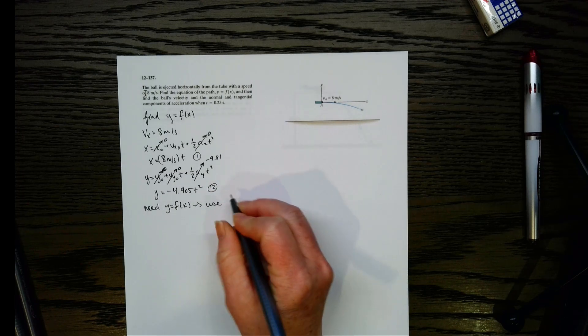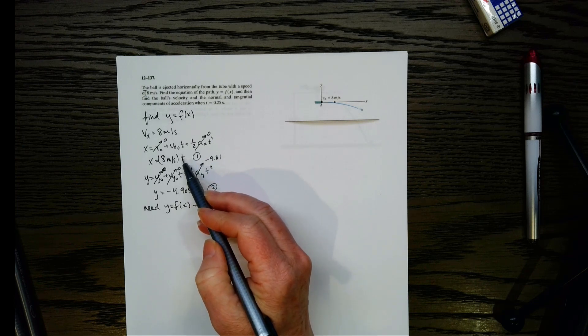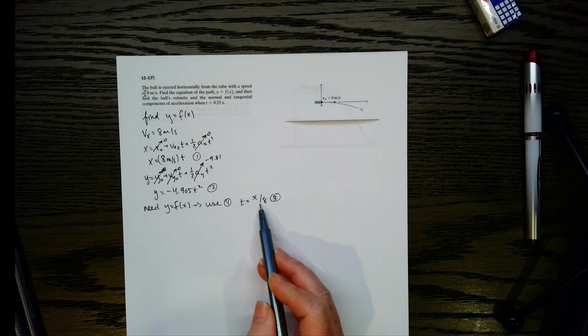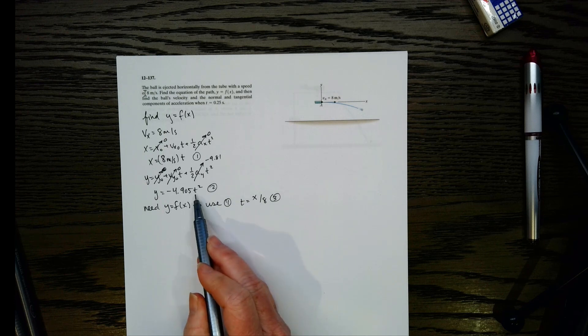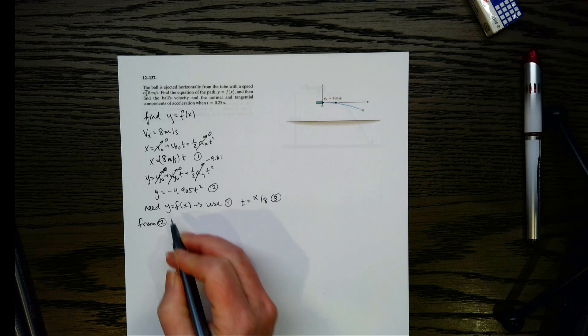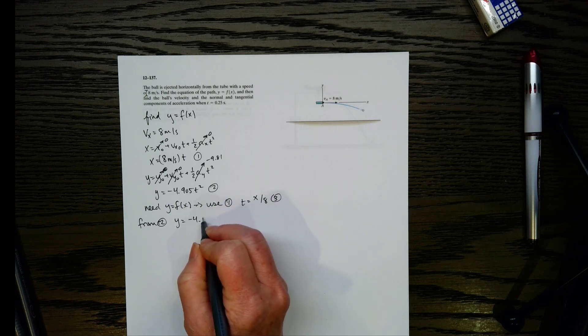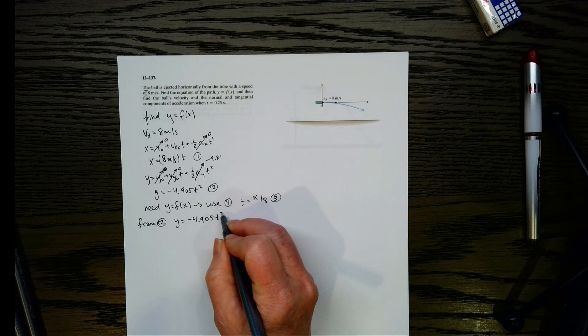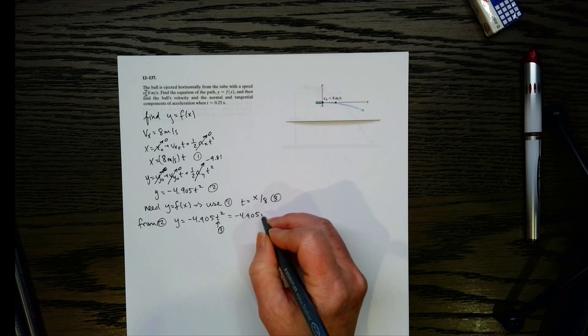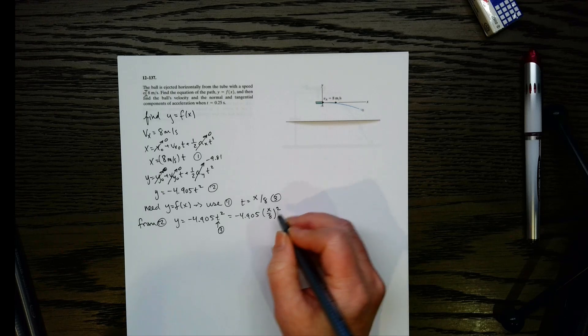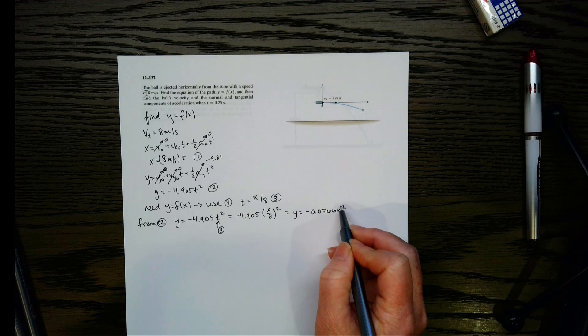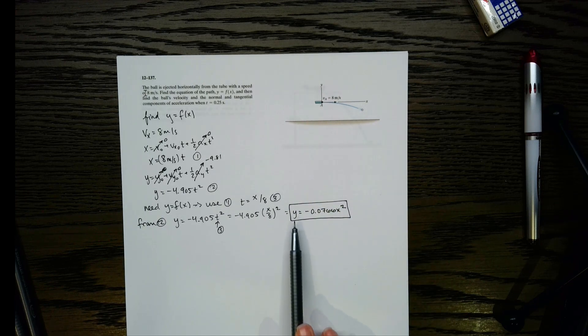Well, what we're going to do is we're going to go back to equation 1. And let's solve that for time. So t would be x over 8. We can call that equation 3. And then now I've got t as a function of x. Well, what if I plug that back in here into equation 2? If I do that, I'm going to get rid of that time component. So let's do that. So from equation 2, we're going to have y equals negative 4.905 t squared. And we're going to plug equation 3 in for t. So it's going to give us negative 4.905 times x over 8 squared. And what you end up with is y equals negative 0.0766x squared. And that is what we were looking for.